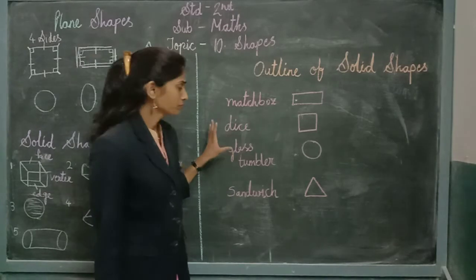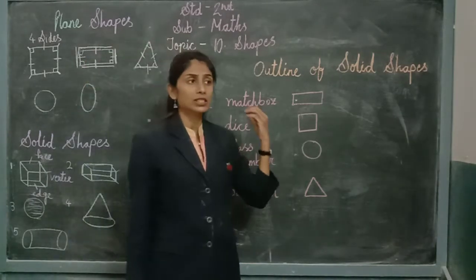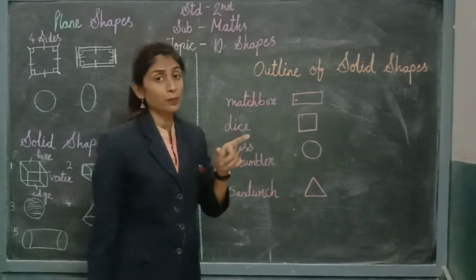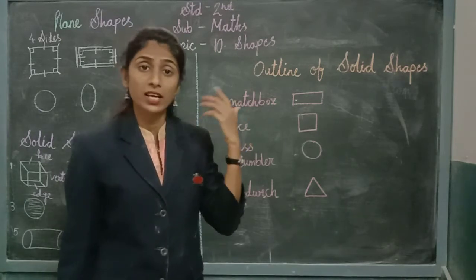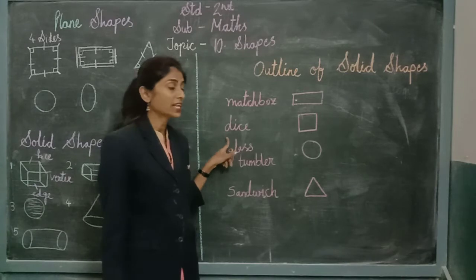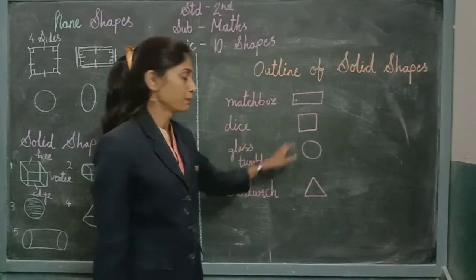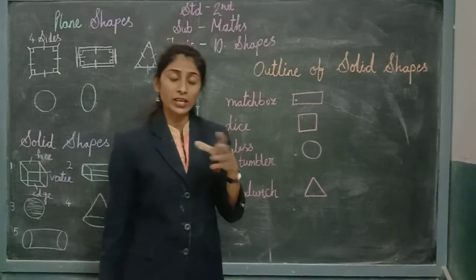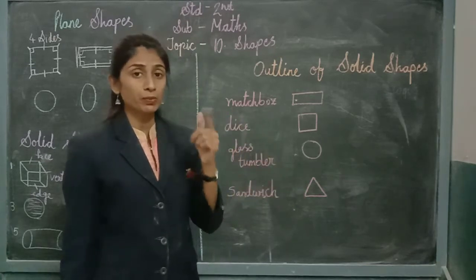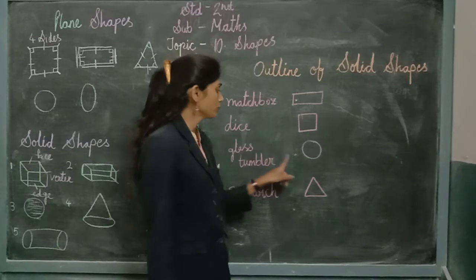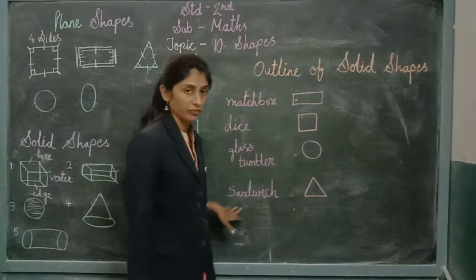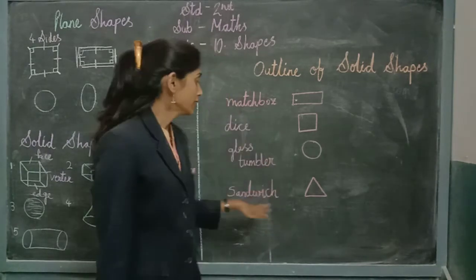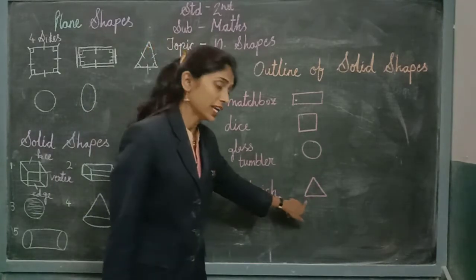The second example is a dice. You know when we play Ludo, snakes and ladders, and other games we use a dice which has numbers — 1, 2, 3, 4, 5, and 6 on each side. That dice has a square outline shape. Next is a glass tumbler — if you see a glass placed on a table, the round shape at the bottom of the glass means the glass has a circle outline. And the last is a sandwich — a sandwich is in a triangle shape, so the outline of that object is a triangle shape.